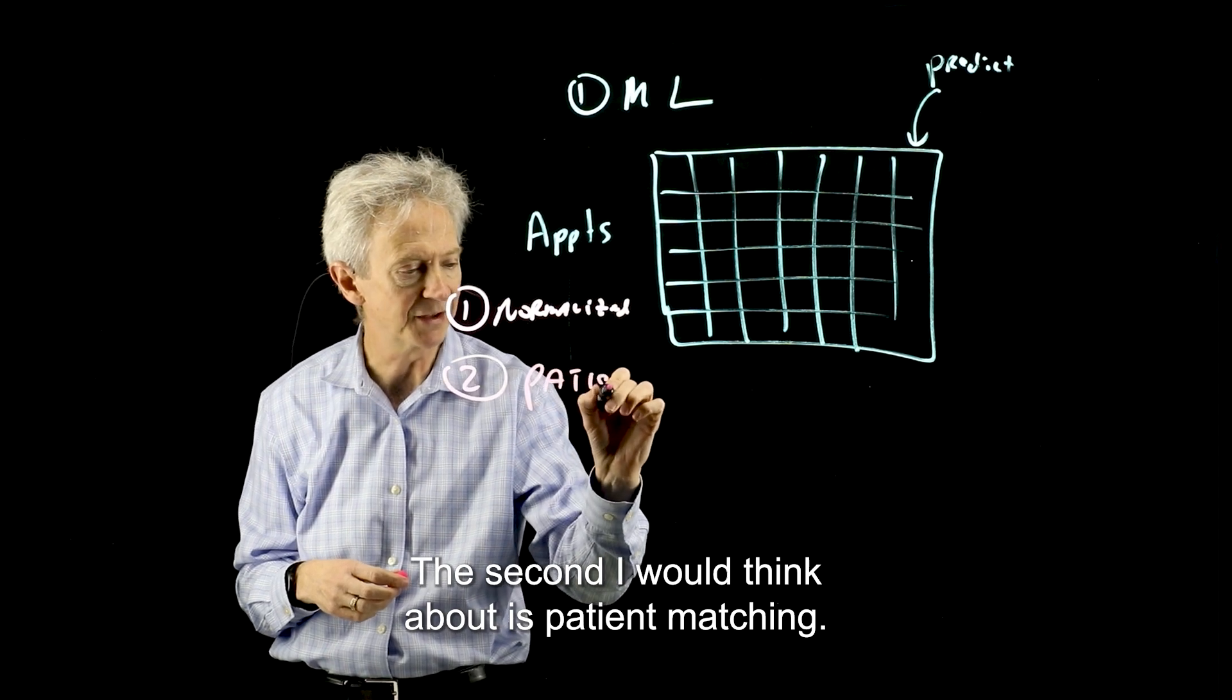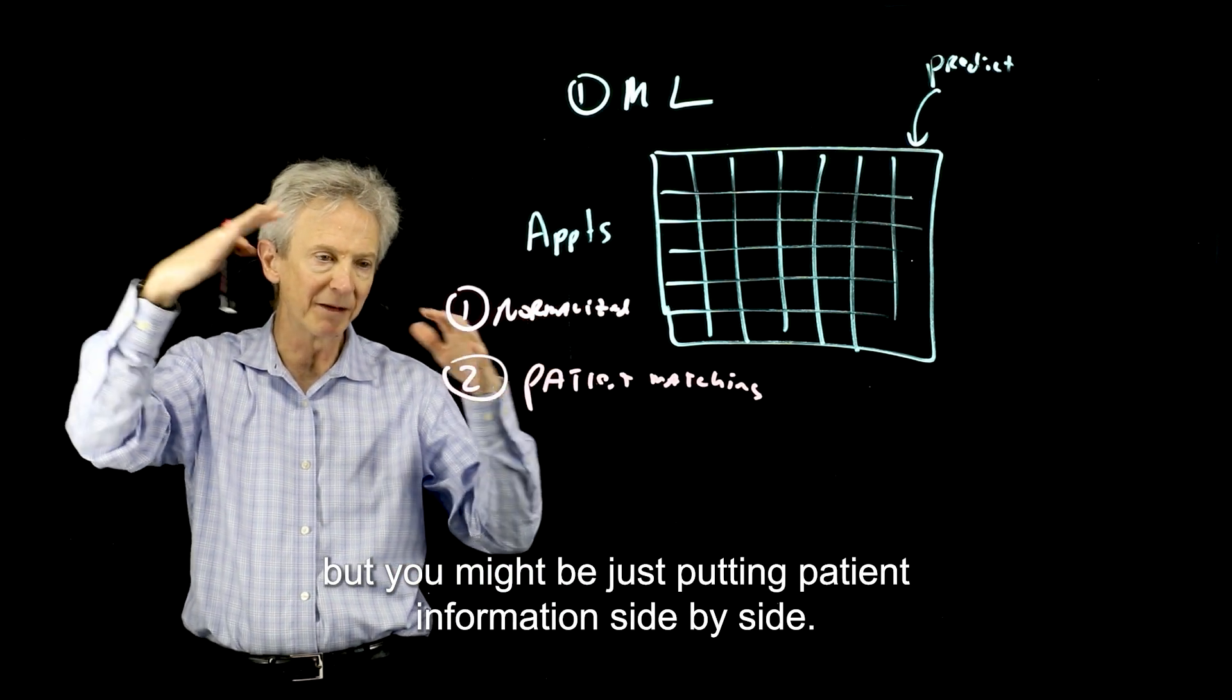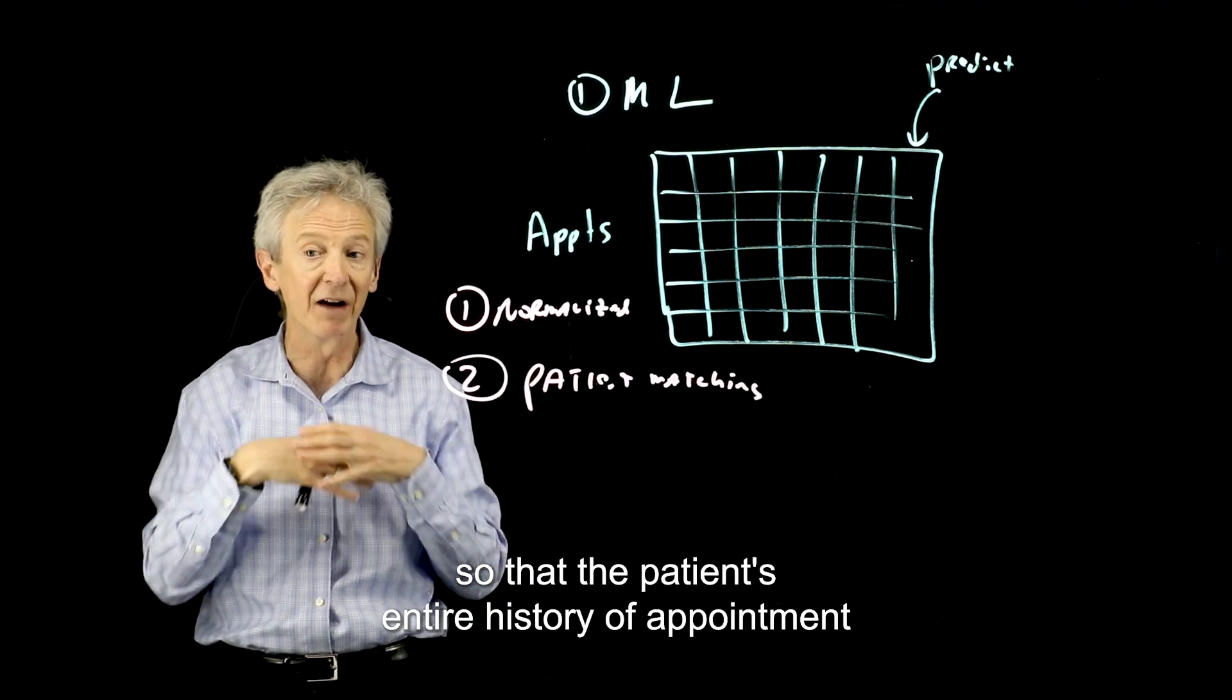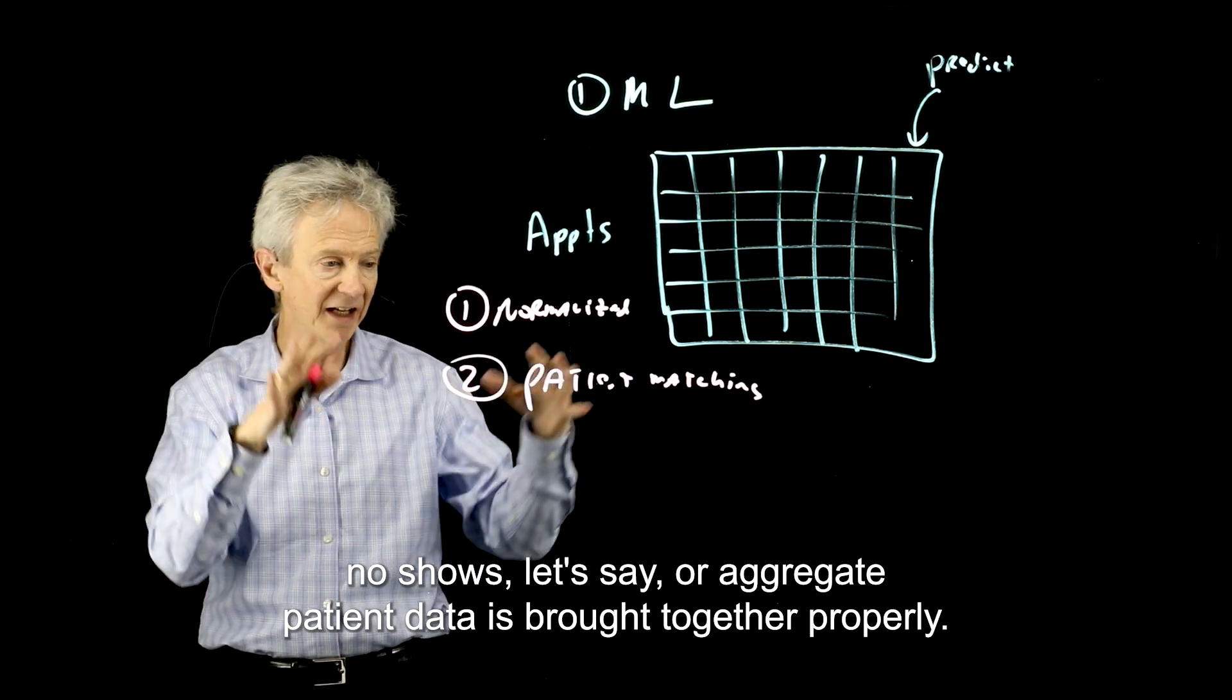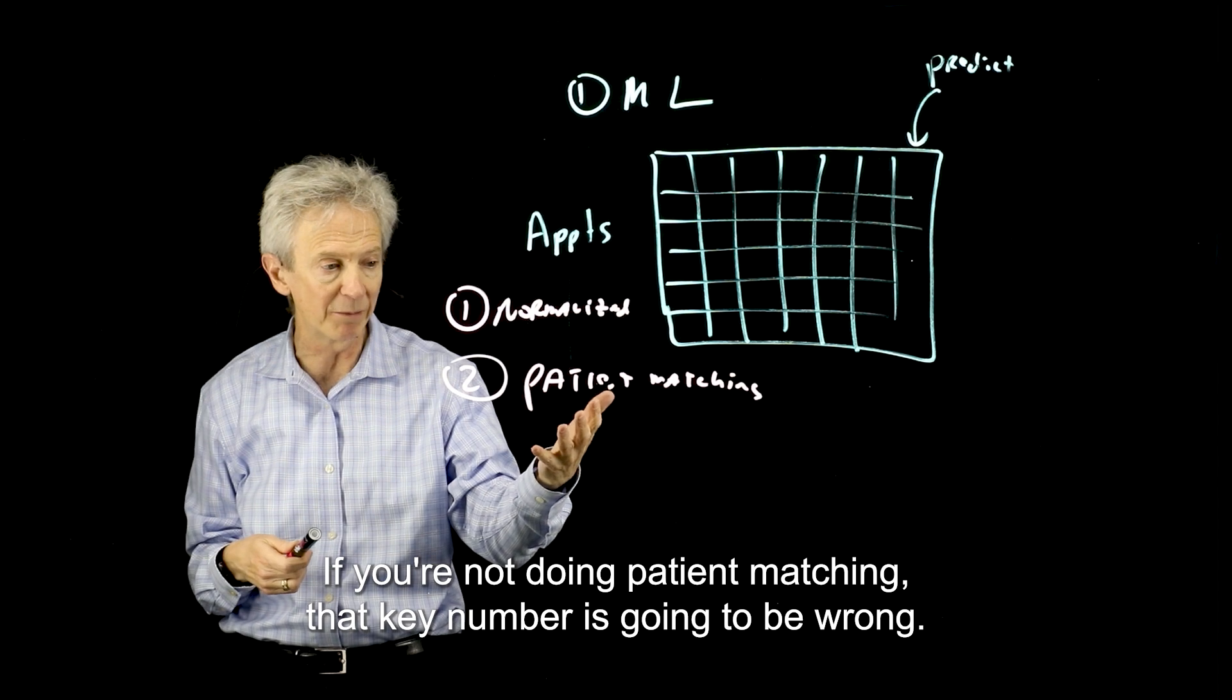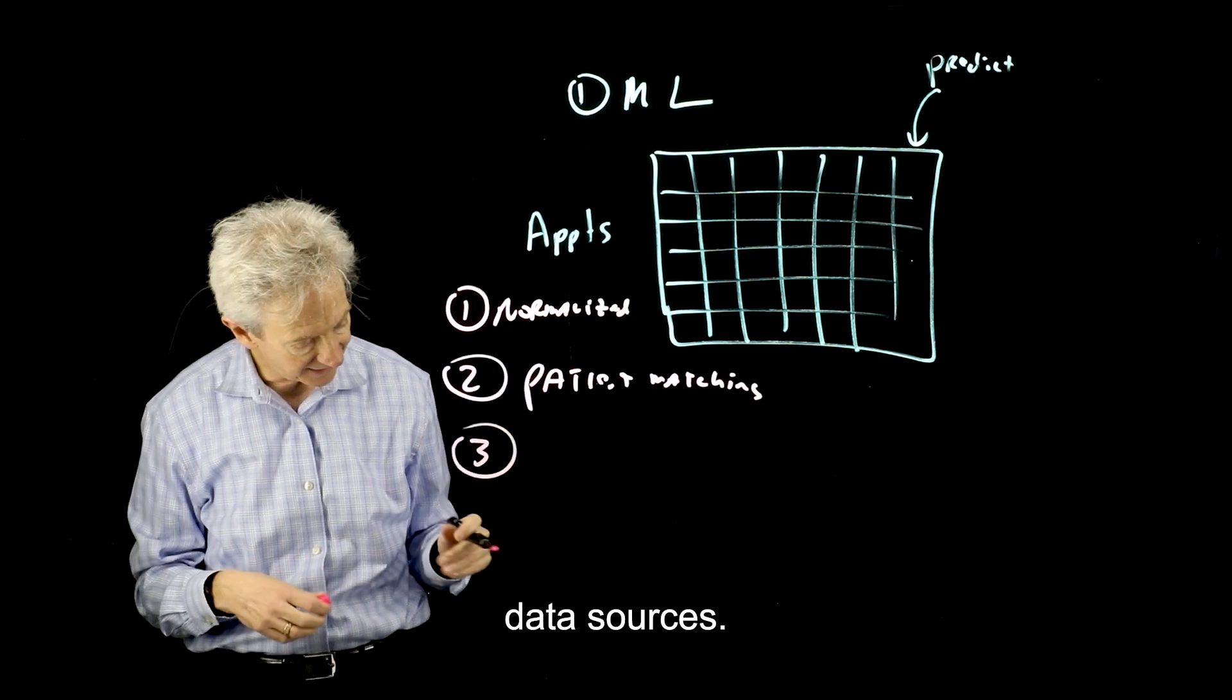The second I would think about is patient matching. If you're getting data from multiple data sources, you might think that you're bringing it together, but you might be just putting patient information side by side. You need to match it under the same patient ID so that the patient's entire history of appointment no-shows, or aggregate patient data, is brought together properly so you get a better sense for what the average number of no-shows a patient might have. If you're not doing patient matching, that key number is going to be wrong.